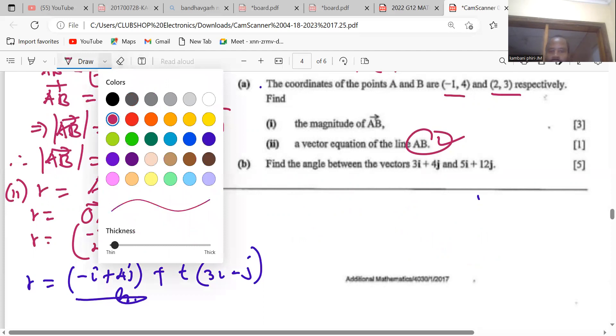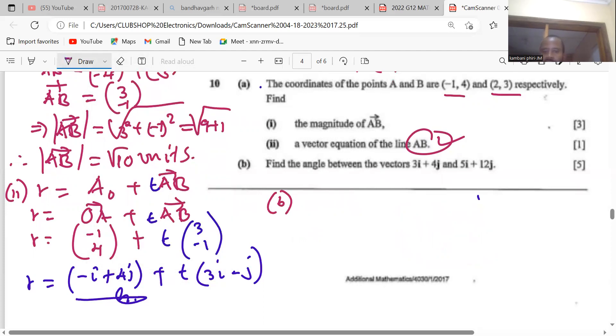We are asked then to find the angle between these two vectors. We are going to find the angle between a equals 3i plus 4j and b equals 5i plus 12j. Now if we are to get the dot product of a and b, we know the dot product is defined as a dot b times b times cos θ, whereas θ is the angle you have between these two vectors.